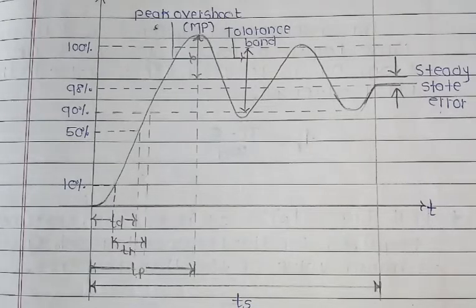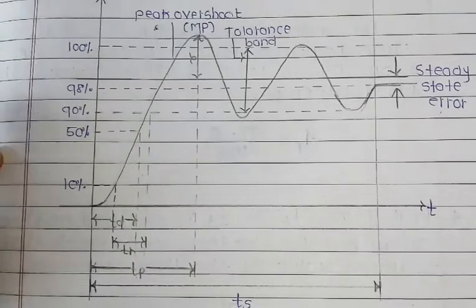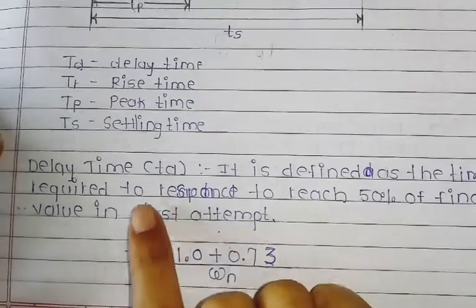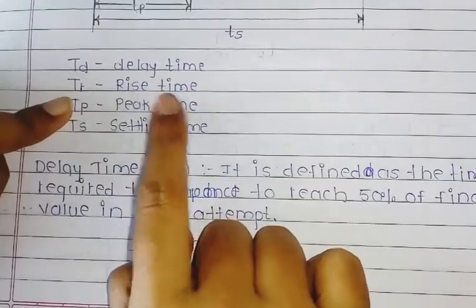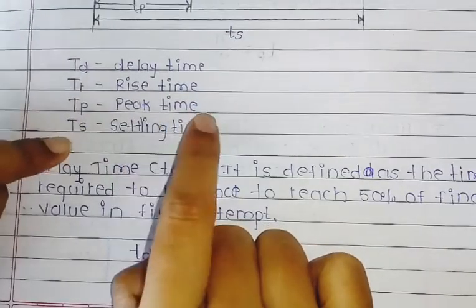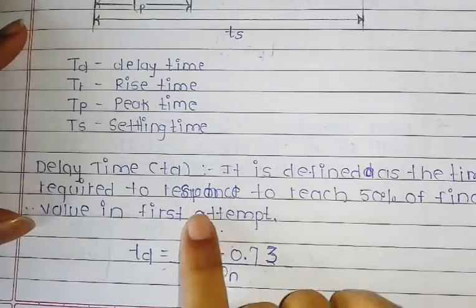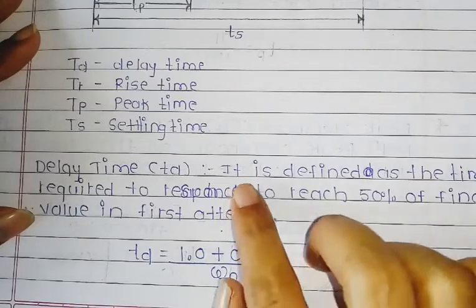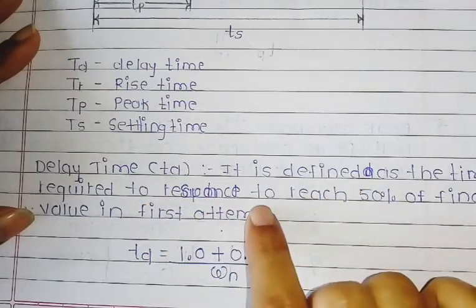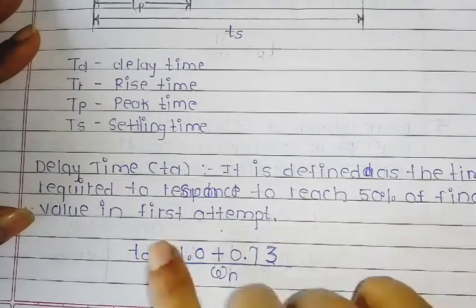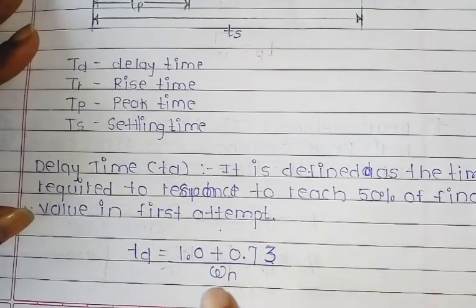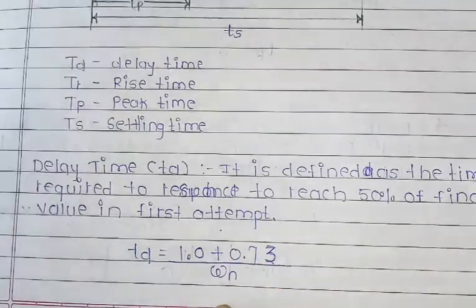So these are all the important definitions. Now we are going to see them in notes form. Td is the delay time, Tr is rise time, Tp is peak time, and Ts is settling time. In delay time: it is defined as the time required for the response to reach 50% of the final value in the first attempt. The Td formula is: 1 plus 0.7 zeta upon omega-n.